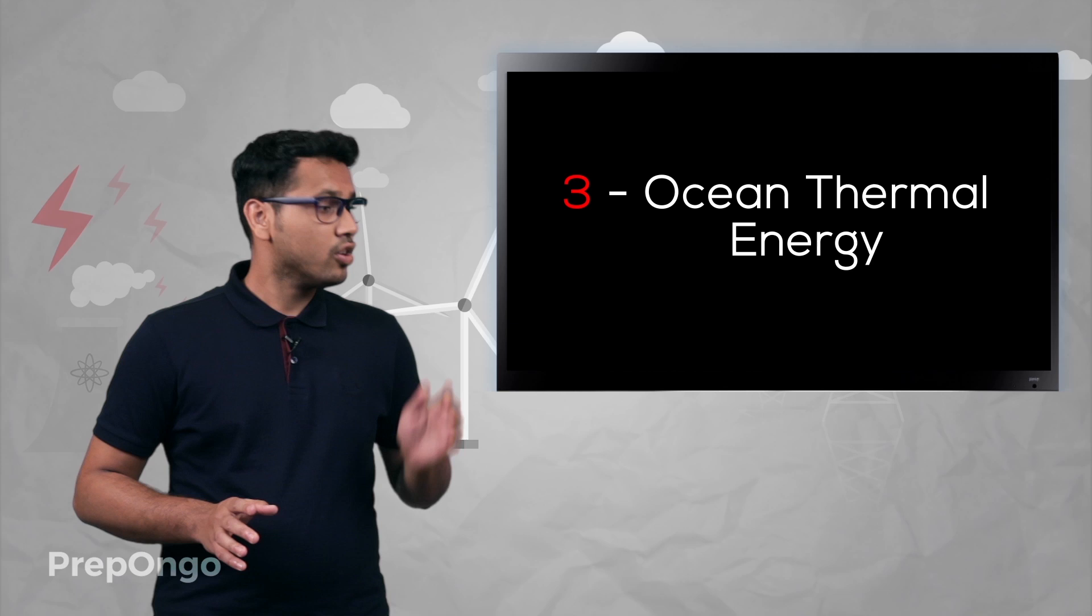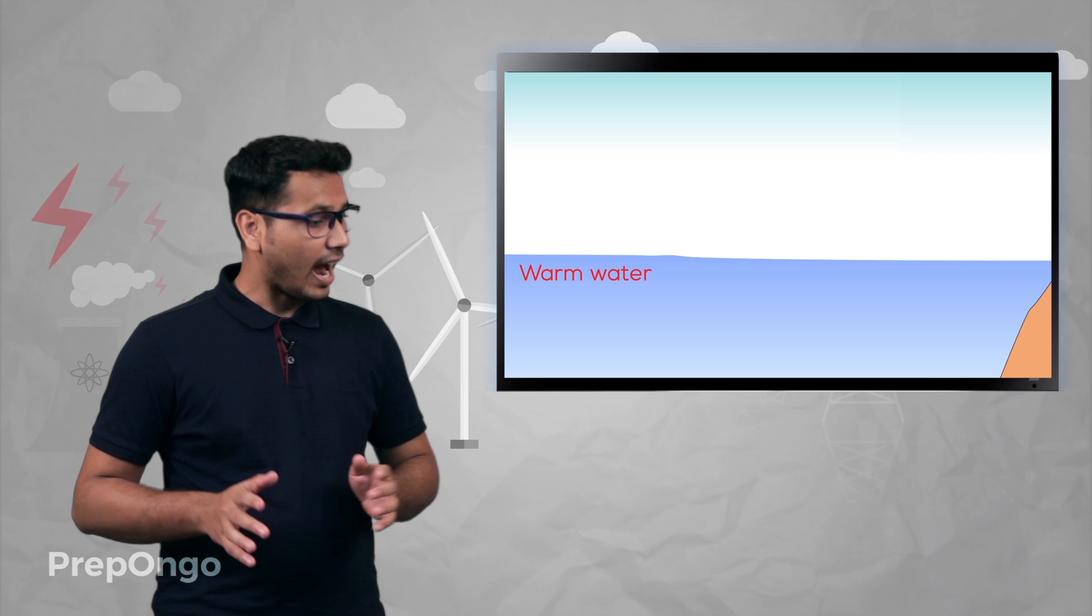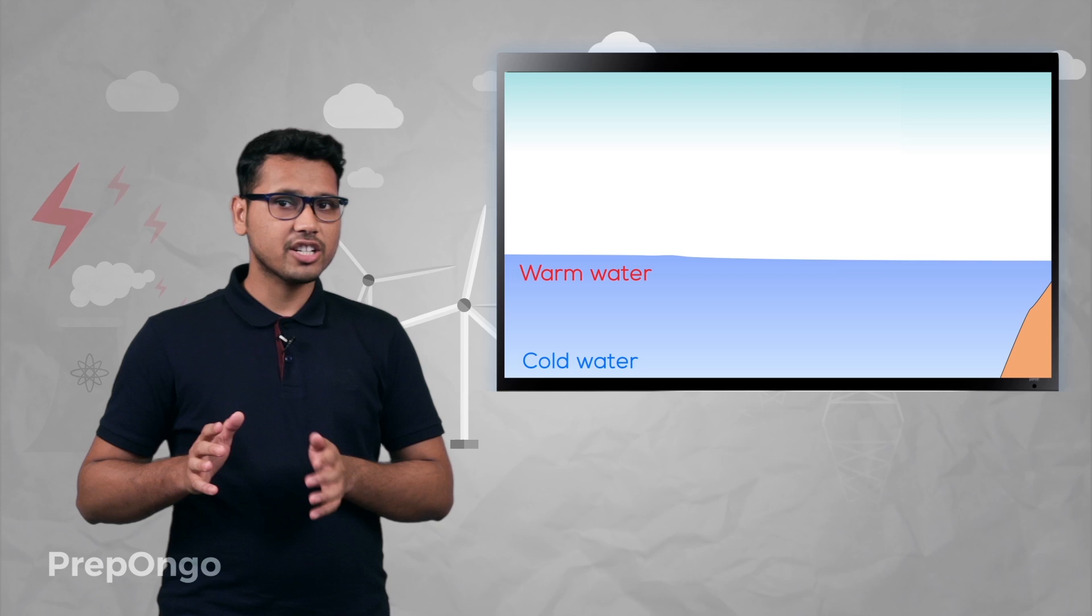Let's learn the third and last form of ocean energy, that is ocean thermal energy. When the sun rays fall on the ocean surface, the water at the upper surface absorbs this heat and becomes warm, while the water at some deeper level is relatively cold.